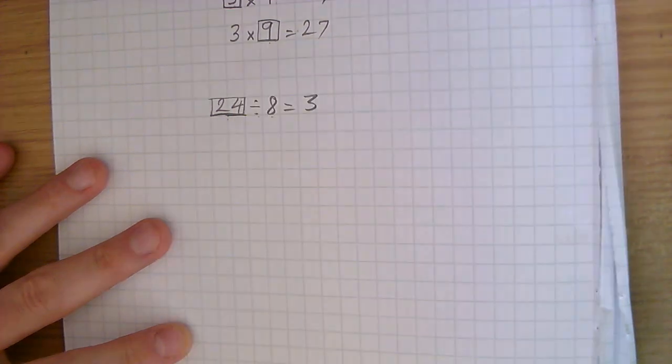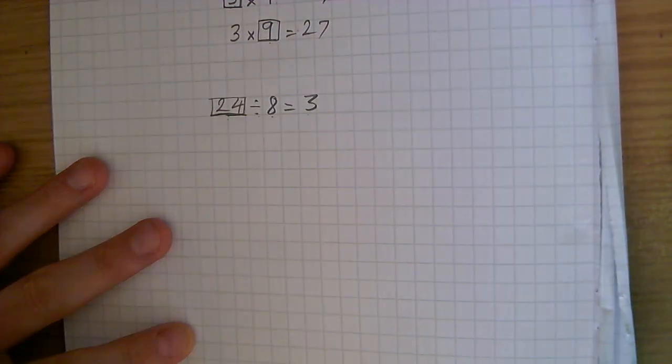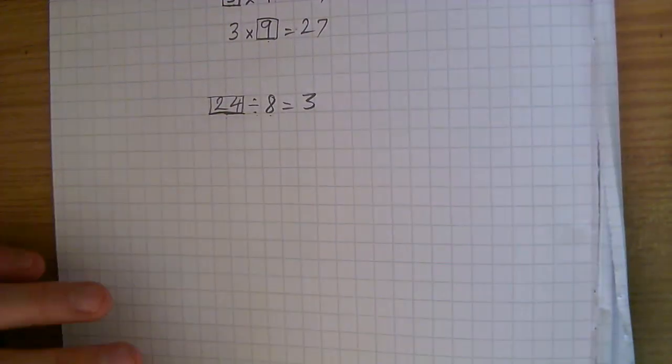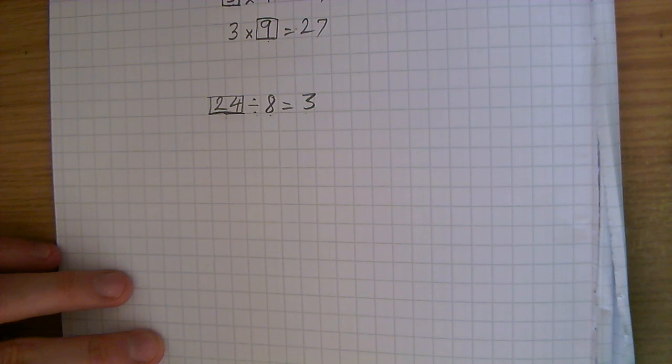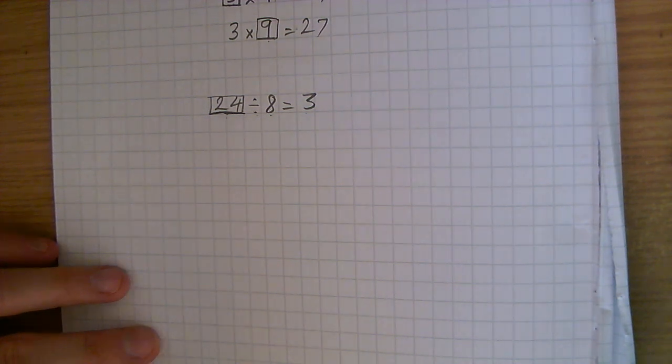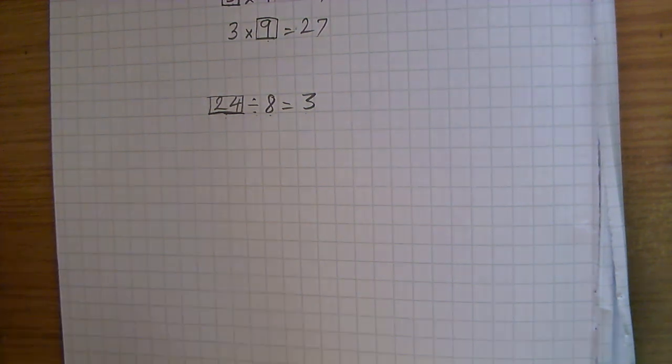And we can check: 24 divided by 8 is 3 — 8, 16, 24 — that's 3 groups. Yes, so that works.